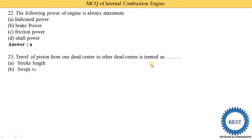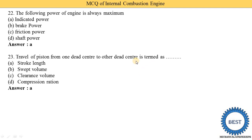Next MCQ: travel of the piston from one dead center to another dead center is termed as — option A: stroke length, option B: swept volume, option C: clearance volume, option D: compression ratio. The distance between top dead center (TDC) and bottom dead center (BDC) is called the stroke length, so option A is correct.